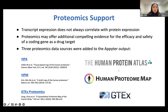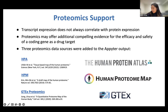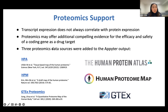Proteomics data from non-disease tissues were retrieved from three different proteomics atlases: the Human Protein Atlas, the Human Proteome Map, and the GTEx Proteome Project. Now in APTER, the user can view protein expression levels from different normal tissues and cell types to identify areas in the body where a candidate protein has low expression and might be a safer target.